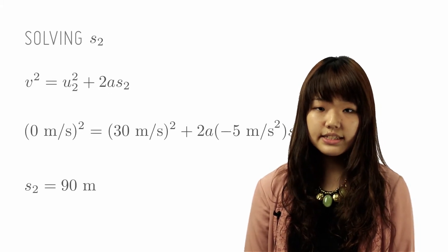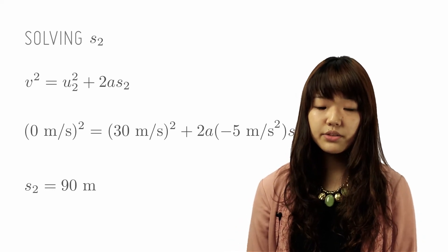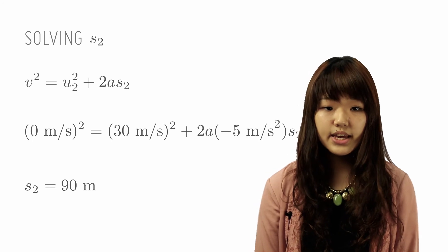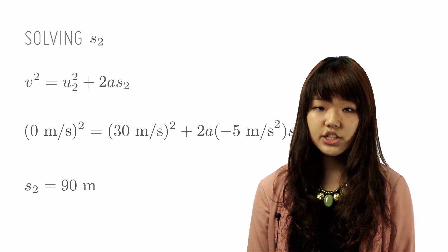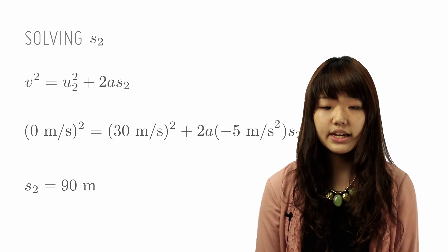We shall apply this same a because it's the same braking force to the second car. We apply the equation V² equals U² plus 2aS and we get that S₂ is actually 90 meters. So the braking distance for the second car will be 90 meters.